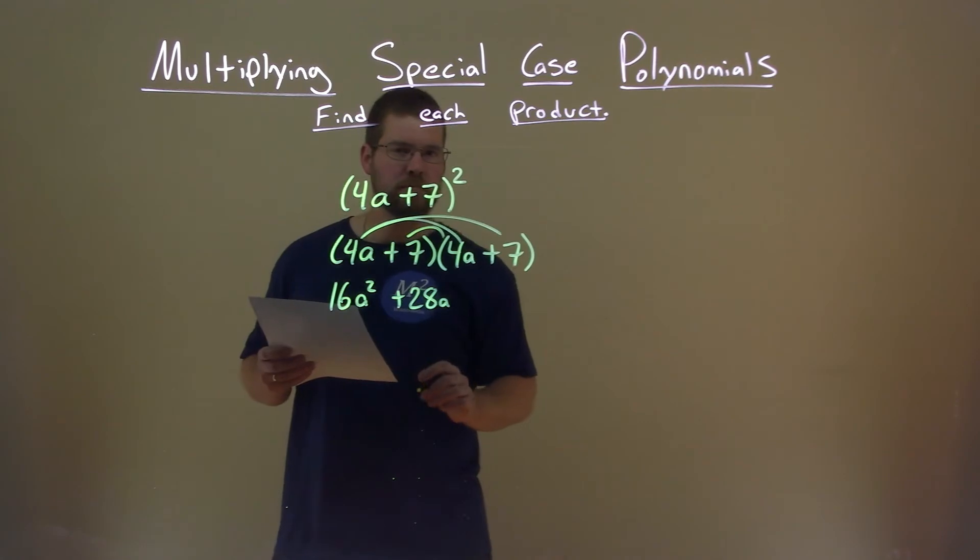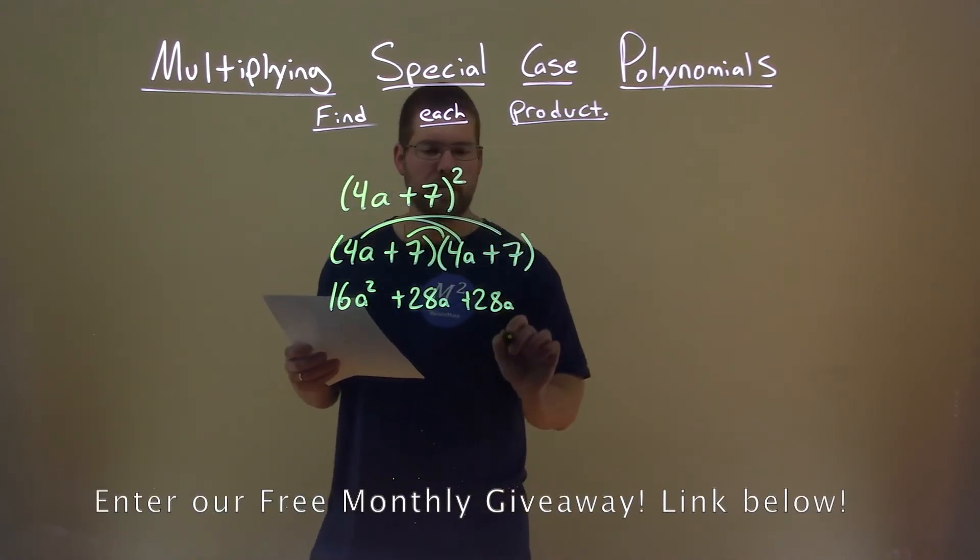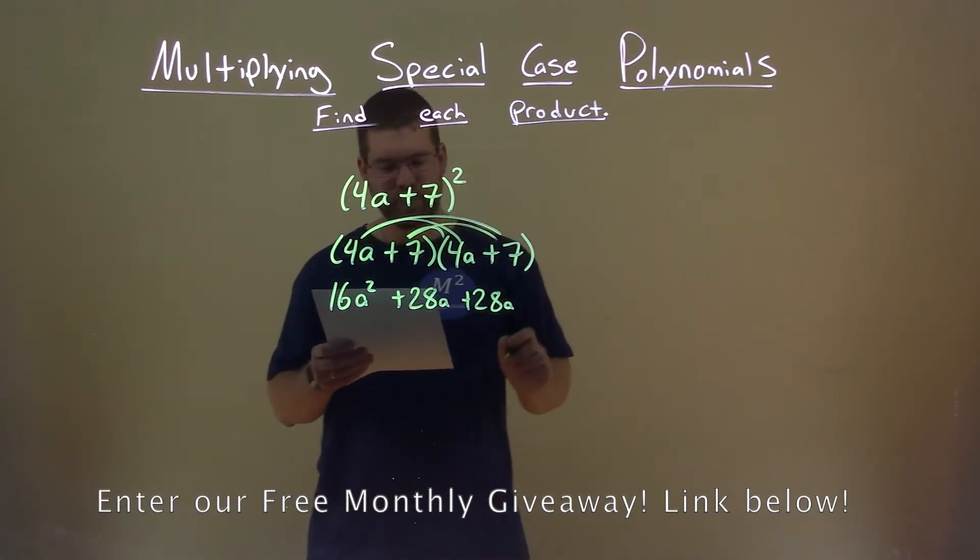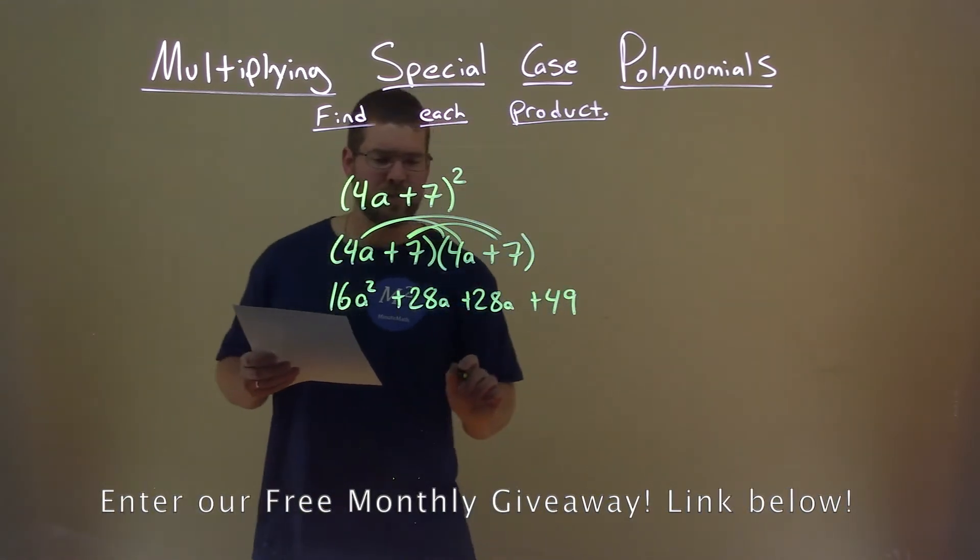7 times 4, same thing, plus 28a. And 7 times 7, well, that's 49.